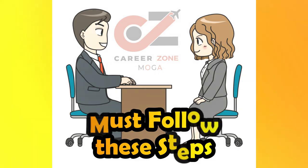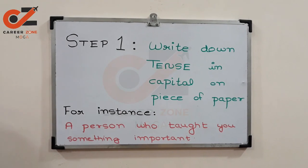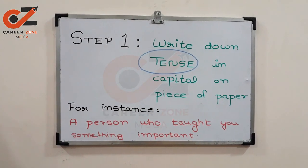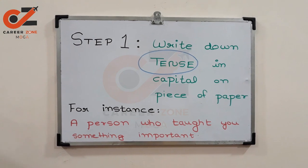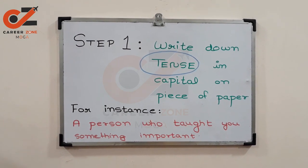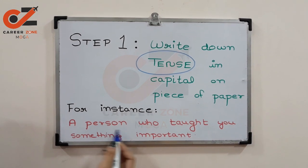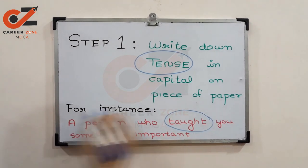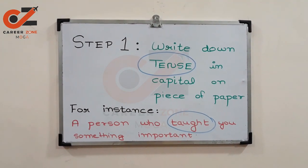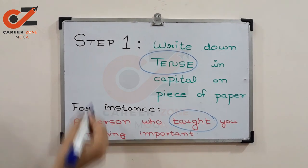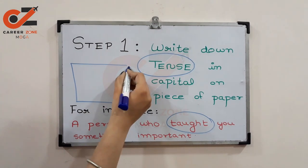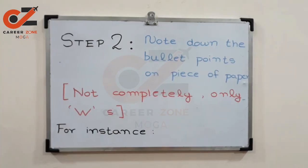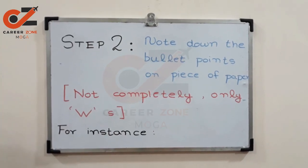So let's start. Our first step is to write down the tense and capital on a piece of paper. Whenever you get the piece of paper, the first thing you are going to do is write down the tense and capital. For instance, if you are getting the cue card 'a person who taught you something important,' the word 'taught' is mentioned, so this cue card is in past tense. On the piece of paper, first of all, you will be writing 'past.'